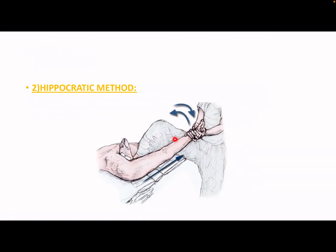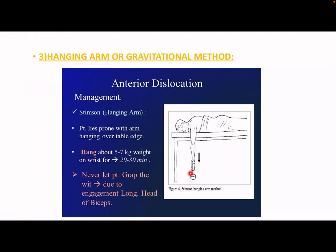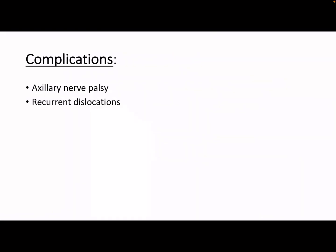The second method is the Hippocratic method, where the surgeon places his foot inside the axilla and pulls or extends the limb to correct the dislocation. The third method is the hanging arm or gravitational method, where a weight of five to seven kilograms is placed on the arm for 20 to 30 minutes. Ask the patient not to grab this weight, because it might lead to damage to the long head of the biceps. These three methods are used for anterior dislocation.